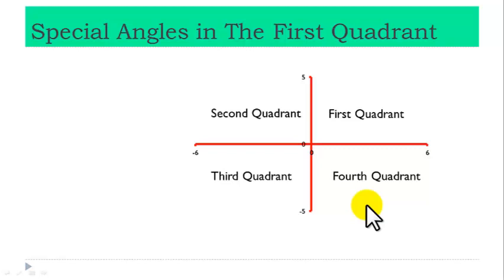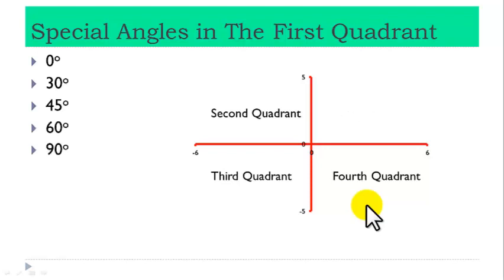Special angles in the first quadrant are 0 degrees, 30 degrees, 45 degrees, 60 degrees, and 90 degrees. First, let us see how we can obtain trig ratios for 0 degrees.